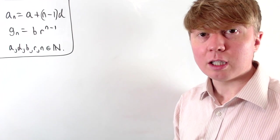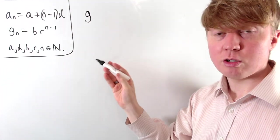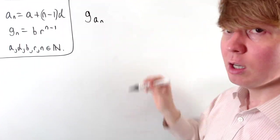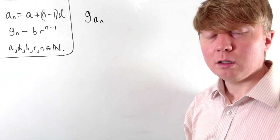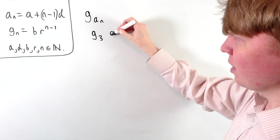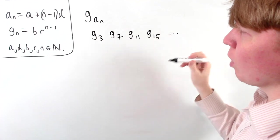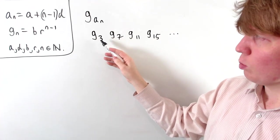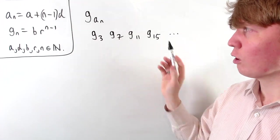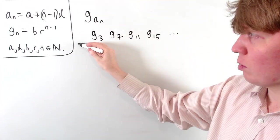The first type of subsequence we'll look at starts with a geometric sequence. Instead of taking all terms g1, g2, g3, we take a subsequence according to an arithmetic sequence. For example, we might take g3, g7, g11, g15, and so on, where the first term is determined by the arithmetic sequence. Here the arithmetic sequence goes up by four each time, so we're skipping some terms and working with this subsequence.